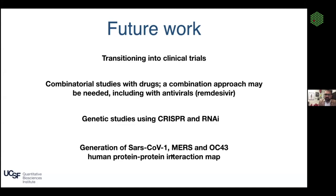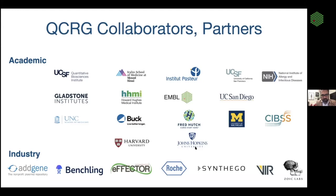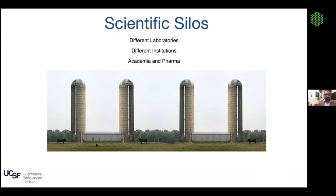We've just recently finished generating a protein-protein interaction map with SARS-CoV-1 and MERS, doing a three-way comparison between SARS-CoV-2, SARS-CoV-1, and MERS — and we'll have OC-43 very quickly as well. It's very exciting from an evolutionary point of view to compare these maps. Obviously we had a lot of great collaborators for this work — many academic and industry connections.